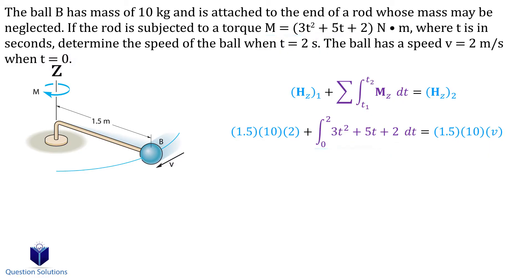On the other side of the equation, we have the same as the initial momenta, except we don't know the velocity, and that's exactly what we're trying to find. Let's start solving. We get 3.47 meters per second, which is the speed of the ball at 2 seconds.